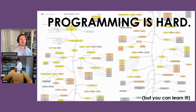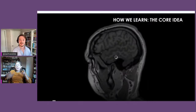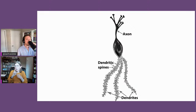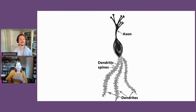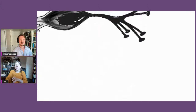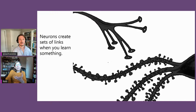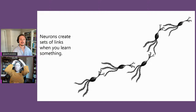So how do we learn? The key idea is that you have a bunch of neurons with arms called dendrites, and things called dendritic spines — like toes that stick out of the legs. Neurons — 86 million in the brain — are making connections between one another in long-term memory when you are learning something. Whether you're learning how to code, take a derivative, conjugate a verb, do a dance step, or play a musical instrument, you're creating sets of links in long-term memory.